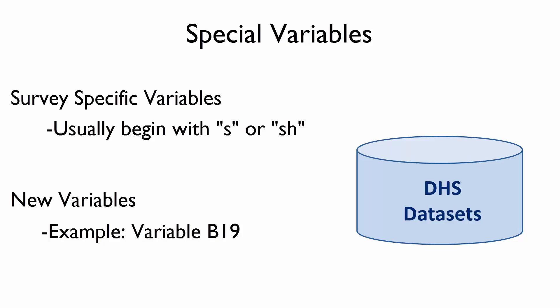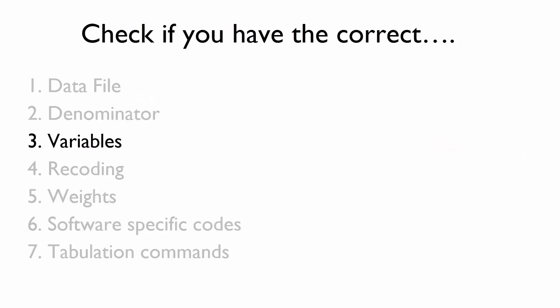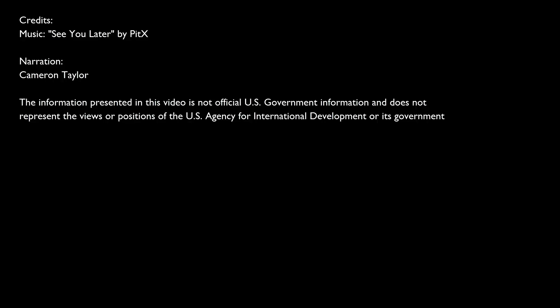Be sure to check the DHS program website for any new variables or changes in recoding. This video covered Tip 3 for matching data and tables produced in a statistical software to the DHS Final Report. Please watch the next video for even more tips and tricks for working with DHS data.